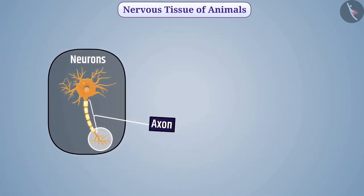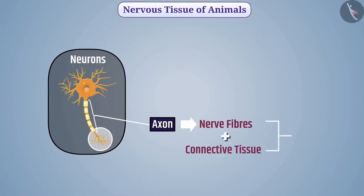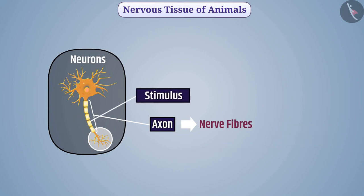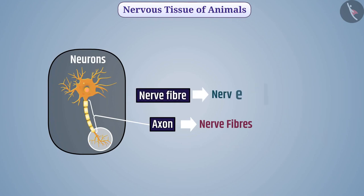Axons are also called nerve fibers. Many nerve fibers bind together by connective tissue and form a nerve. The stimulus that is passed through a nerve fiber is called a nerve impulse.